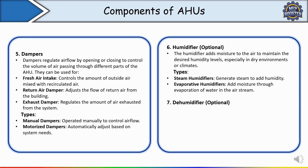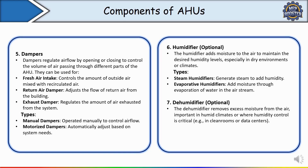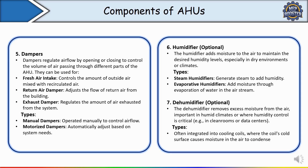The dehumidifier is also an optional component. It removes excess moisture from the air — important in humid climates or where humidity control is critical, for example in clean rooms or data centers. It is typically integrated into the cooling coil, where cold surfaces cause moisture in the air to condense. In a coastal hotel, the AHU dehumidifier keeps indoor humidity levels in check to ensure rooms do not feel damp and uncomfortable for guests.